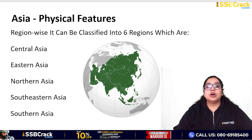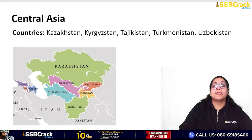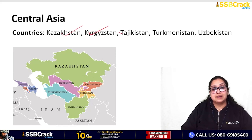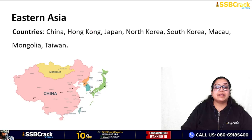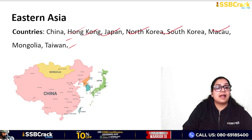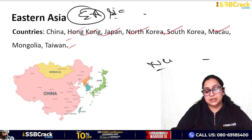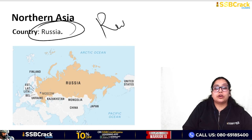Asia is divided into Central Asia, Eastern Asia, Northern Asia, South-Eastern Asia, Southern Asia, and Western Asia. Central Asia includes Kazakhstan, Kyrgyzstan, Tajikistan, Turkmenistan, and Uzbekistan. Eastern Asia includes China, Hong Kong, Japan, North Korea, South Korea, Macao, Mongolia, and Taiwan. So whenever you read about Eastern or Central Asia in the news, you should know which countries are being referred to.